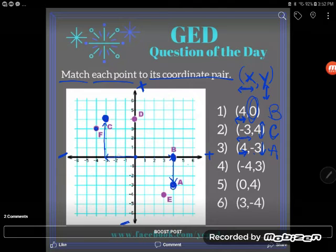Negative four, three. So I'll go negative four in the horizontal direction. Positive three in the vertical direction. I end up at point F.